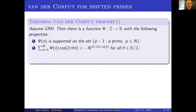If ψ is a function with sort of average value one, then that exponential sum being lower bounded by −n^{11/12} means it's close to being positive everywhere. This is just a normalization condition — ψ does in fact have average value one. So there is a function supported on the shifted primes with almost positive Fourier transform; that's what's called the van der Corput property.